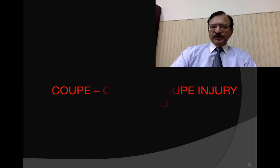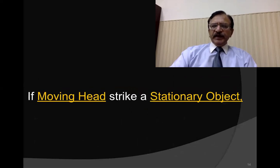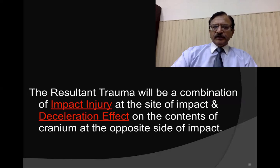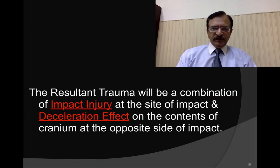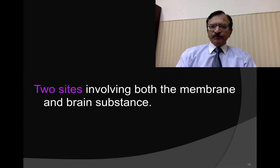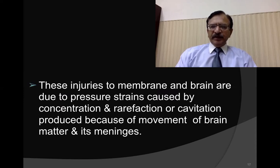Now, the coup and contra-coup injuries to the head. If a moving head strikes a stationary object, the resultant trauma will be a combination of impact injury at the site of impact and deceleration injury on the contents of the cranium at the opposite side of the impact. The coup injury is at the point of impact, and the contra-coup injury is opposite to the point of impact, involving both the membranes and the brain substance. These injuries are due to pressure strains caused by concentration and rarefaction or cavitation produced by the movement of brain matter and its meninges.